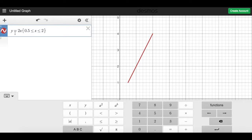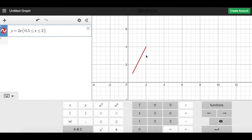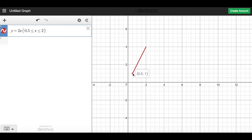So I'll start with y equals 2x. Now this is a line with a slope of 2. But what I'm going to do is I'm going to restrict the domain of this line to only being between 0.5 and 2. The reason is if I don't restrict the domain, this line is going to continue forever.